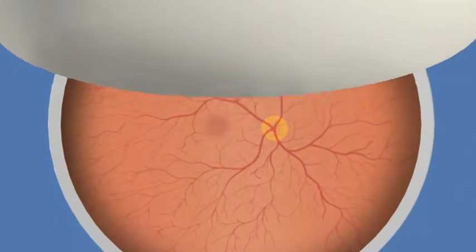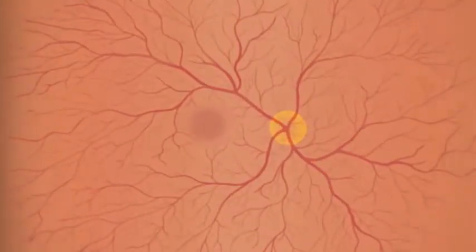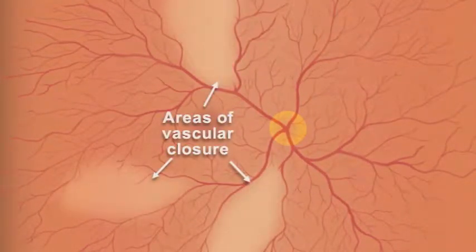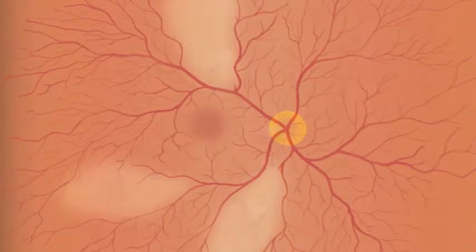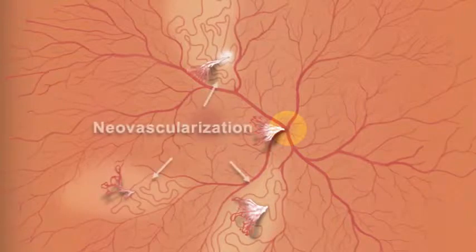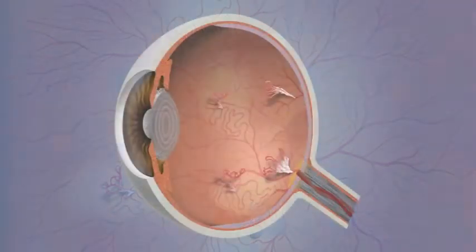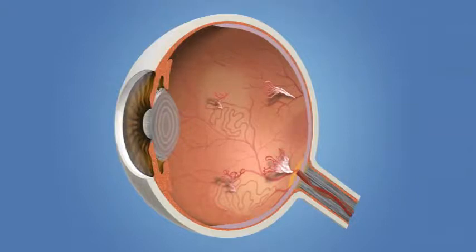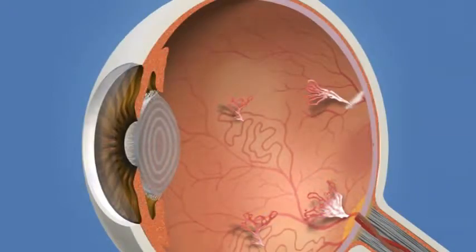With PDR, many blood vessels in the retina close, preventing adequate blood flow to the retina. The retina responds to this problem by trying to grow new blood vessels. However, these new abnormal vessels do not provide proper blood flow. They can also bleed as well as lead to scar tissue, which may cause the retina to wrinkle or even detach.